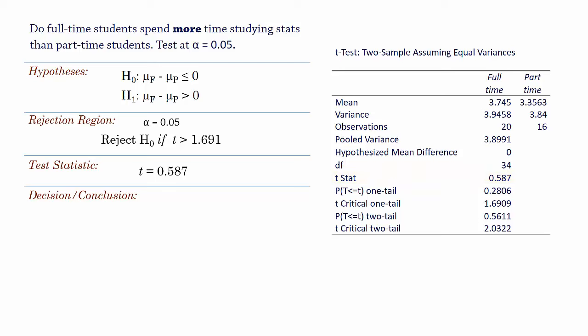The test statistic 0.587 is not greater than 1.691, so we do not reject the null hypothesis. We can also see that the 1-tailed p-value here is greater than 0.05, telling us again not to reject the null hypothesis.